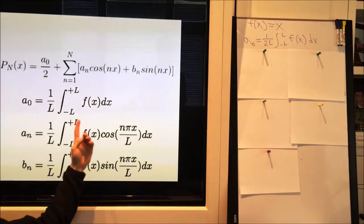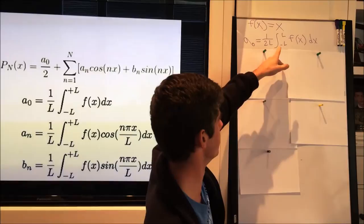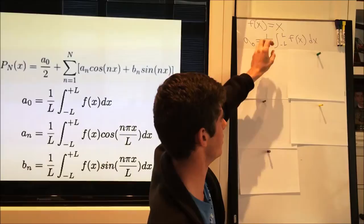First we're going to calculate a_0, also listed here for the function f equals x. As you can see, a_0 equals 1 over 2L, which is half the period, and the integral from negative L to L of the equation.